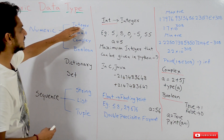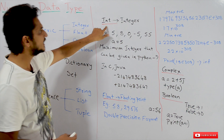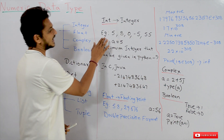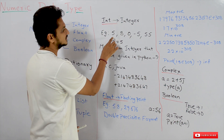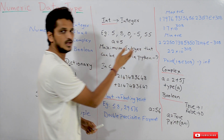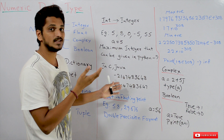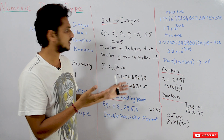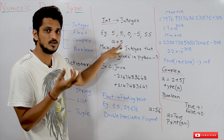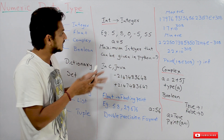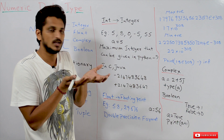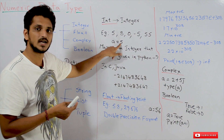Coming to the first data type — integer data type. We call it as int. For example, values like 5, 8, 0, -5, 55 — this type of values we call integer values. For example, if A is equal to 5, then 5 is an integer value, so Python assigns A with an integer data type.